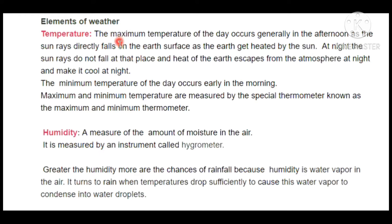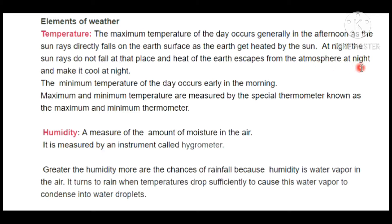Now we are going to discuss the elements of weather. The first element is temperature. The maximum temperature — the highest heat in a 24-hour period — occurs in the afternoon, because that is when the sun's rays fall most directly on the Earth, heating it up. In the evening when the sun sets, the heat that Earth accumulated during the day escapes from the atmosphere, which is why it gets colder in the evening and at night.